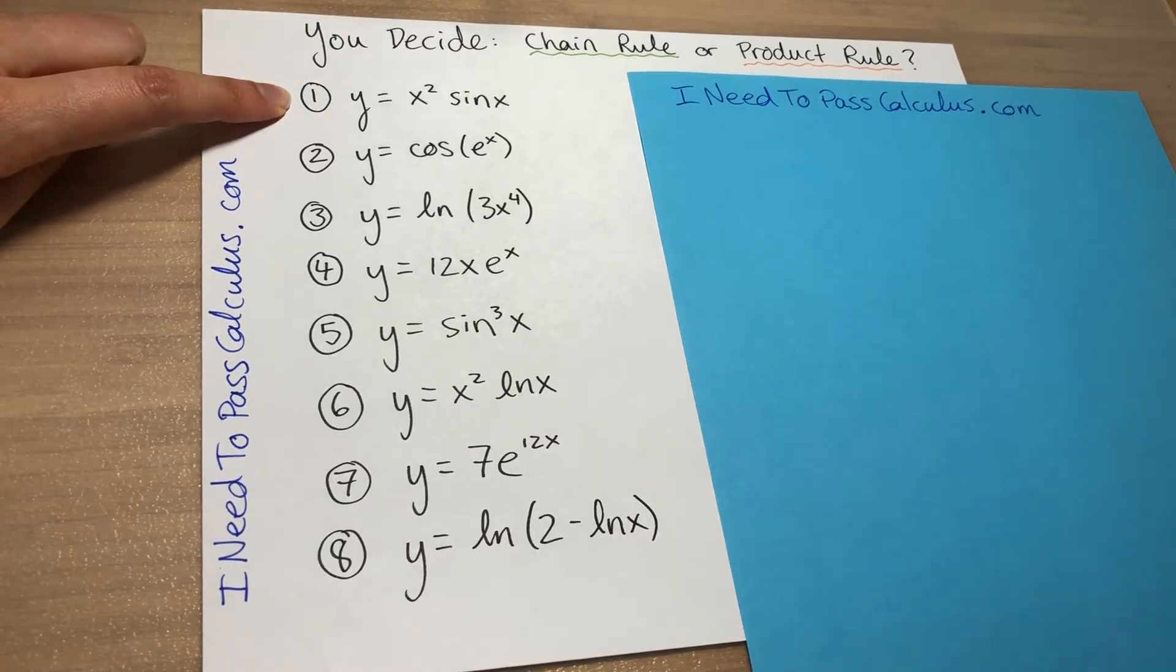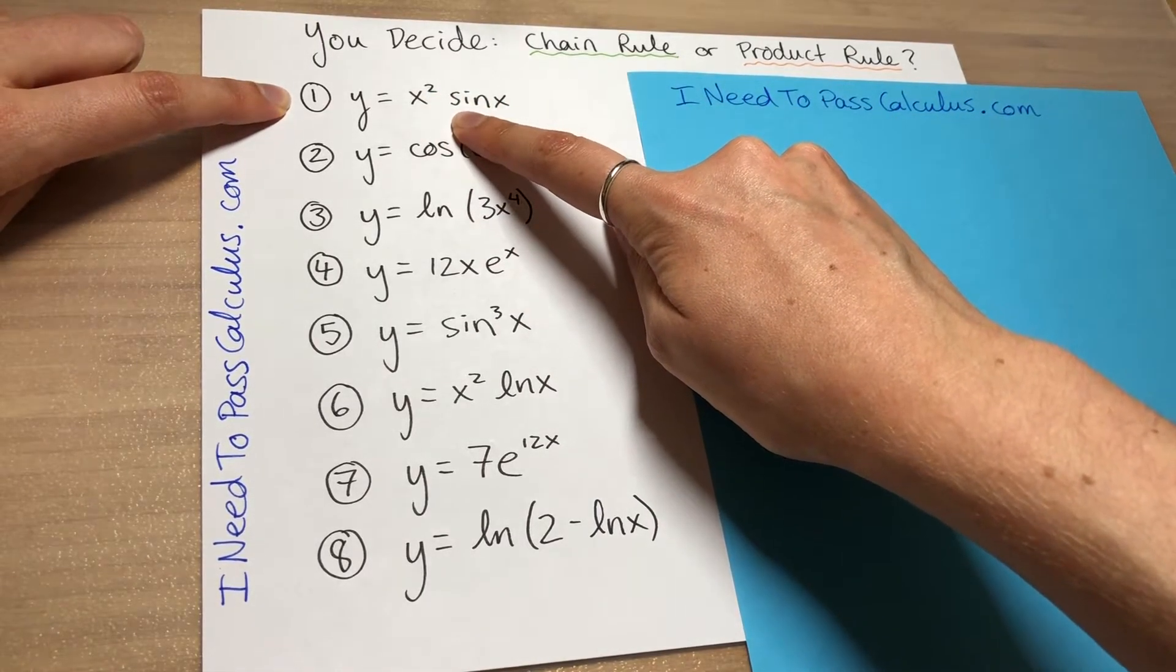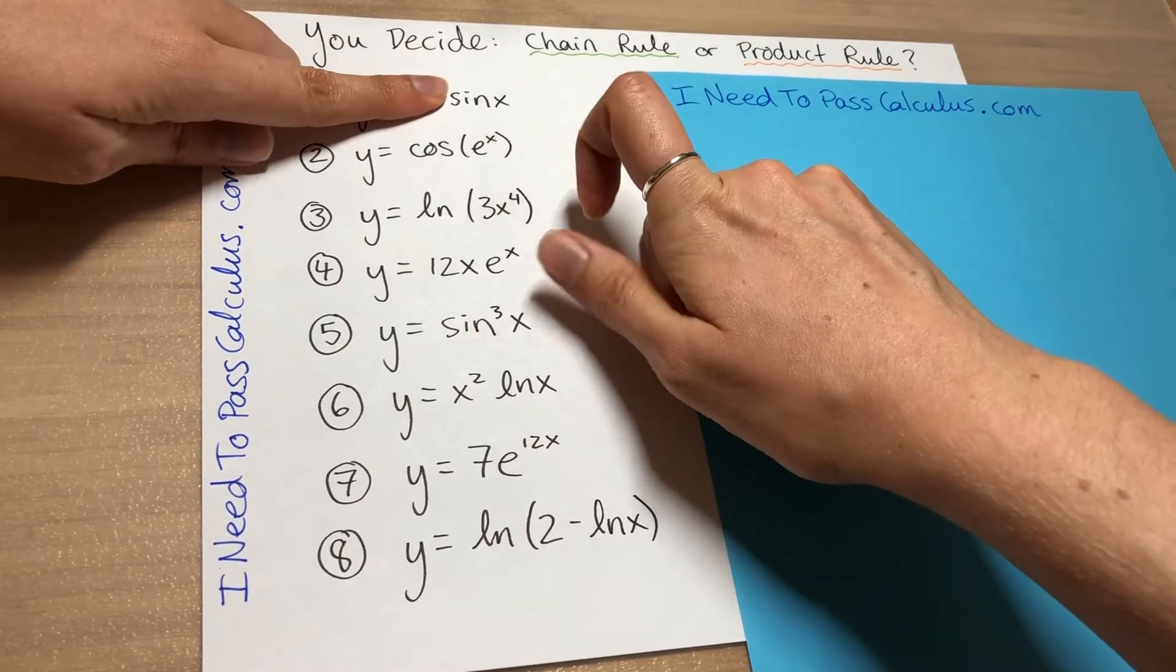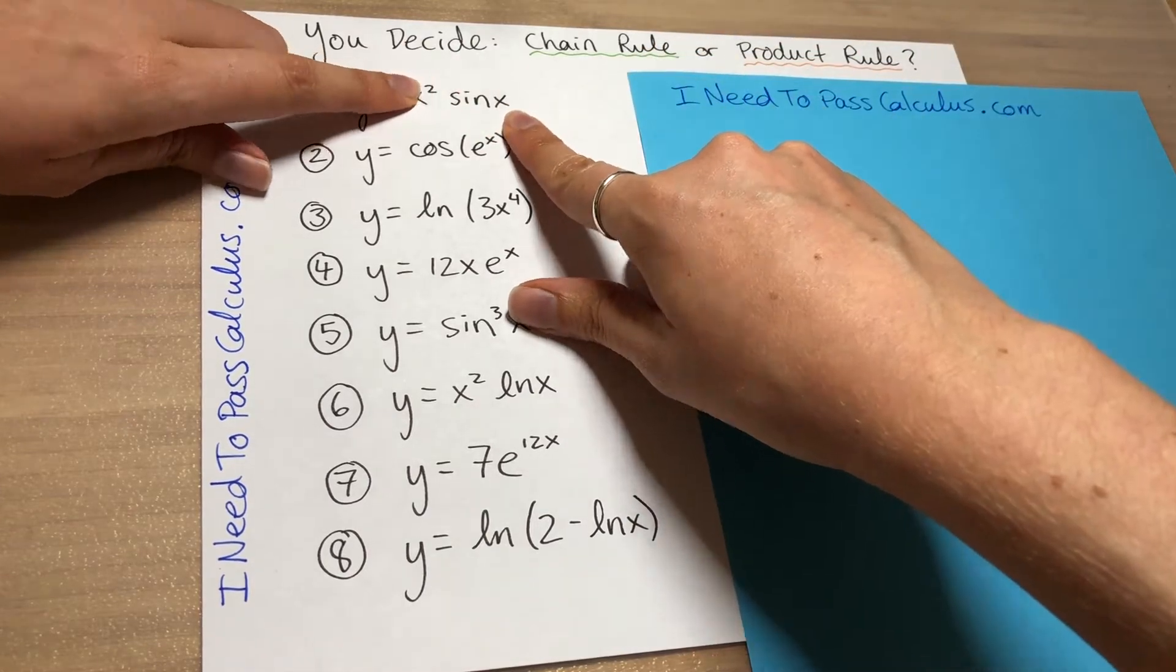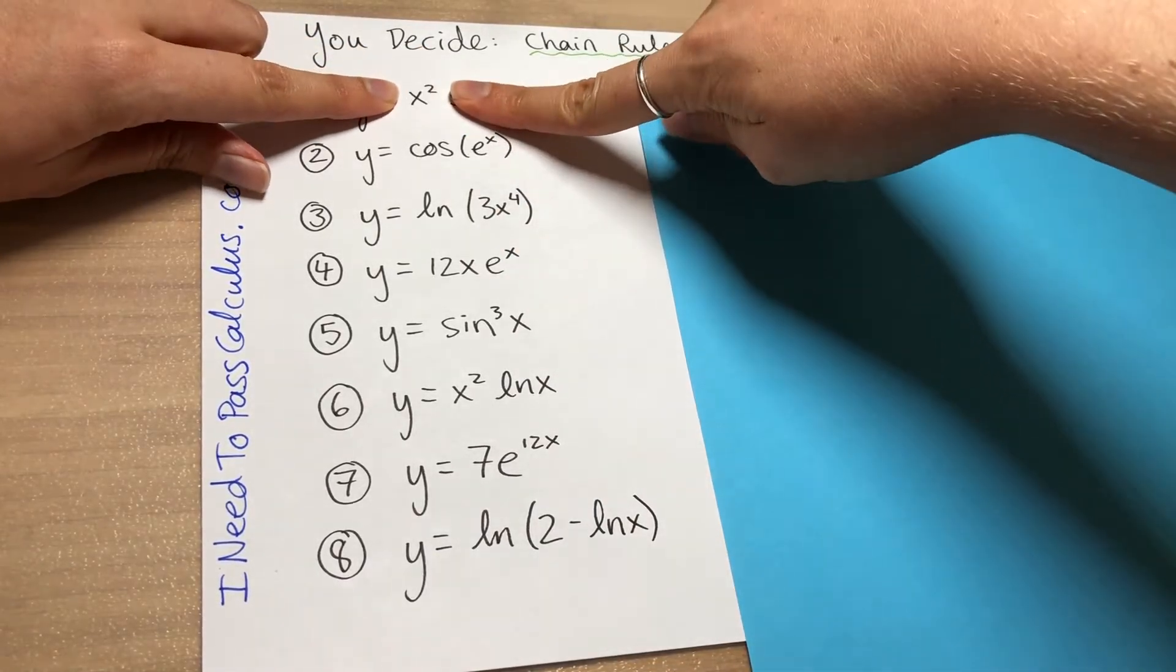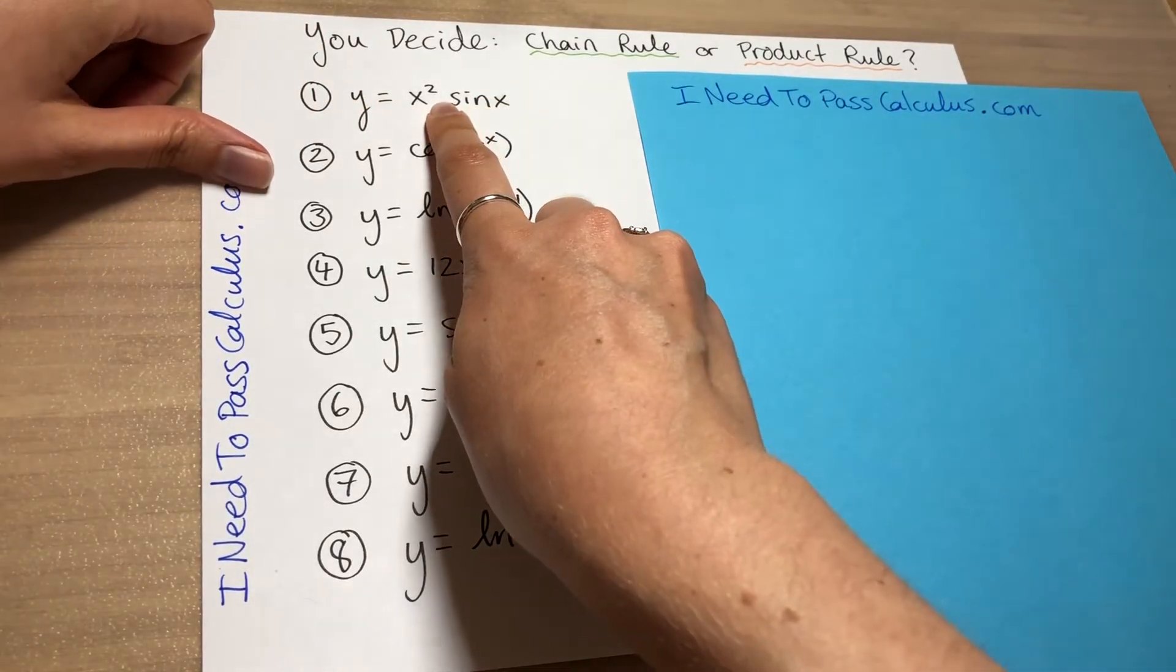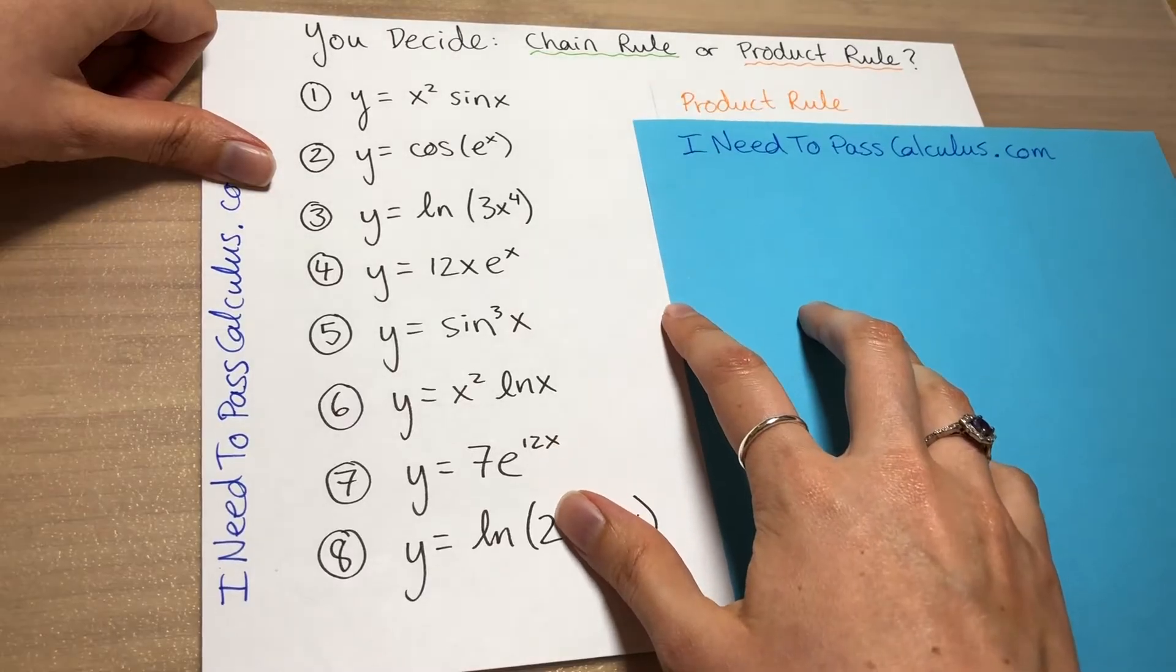So let's get started. For problem one, what you want to do is look at the two main pieces of the function you're given and see if they can survive on their own. So the two main pieces are x squared and sin x. And when you cover up the other part, they're standalone functions that could be their own problem. So that means these are glued together with a product and so you would use the product rule for this problem.